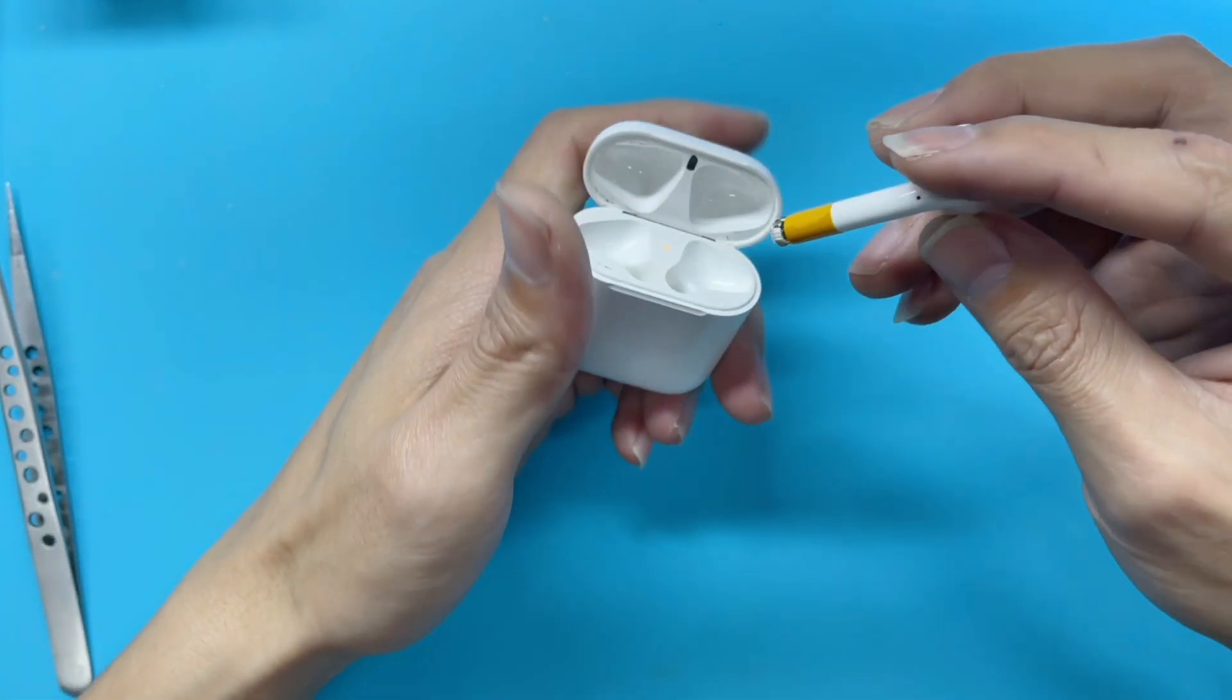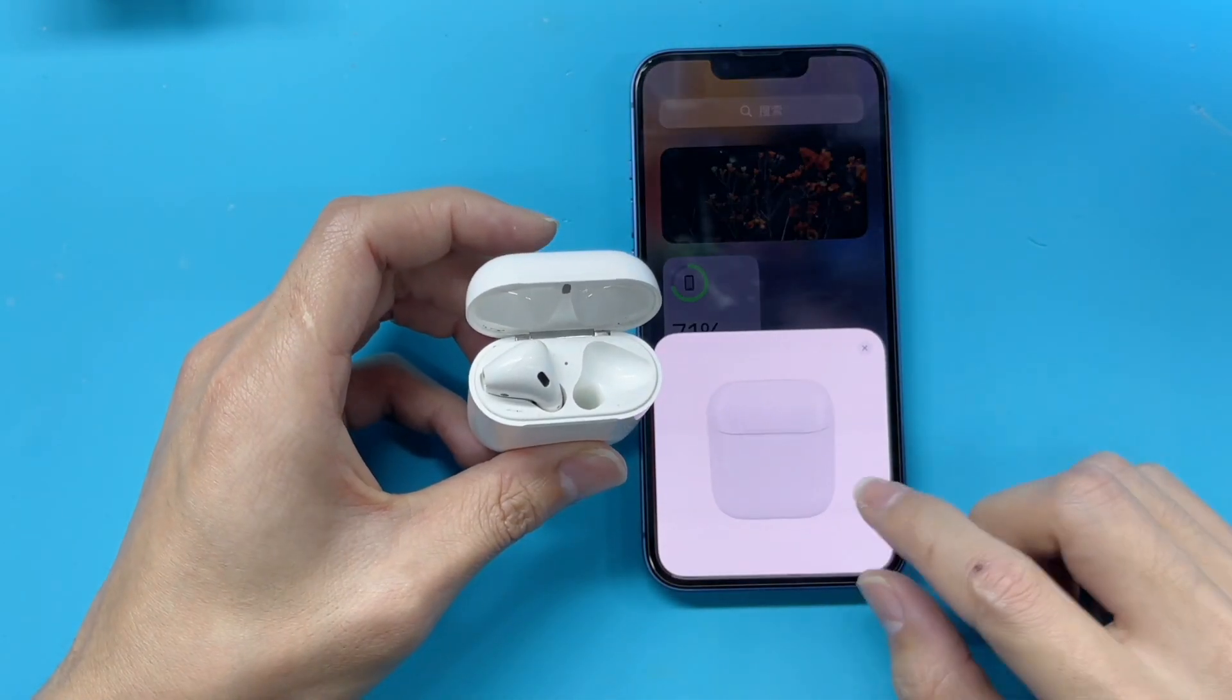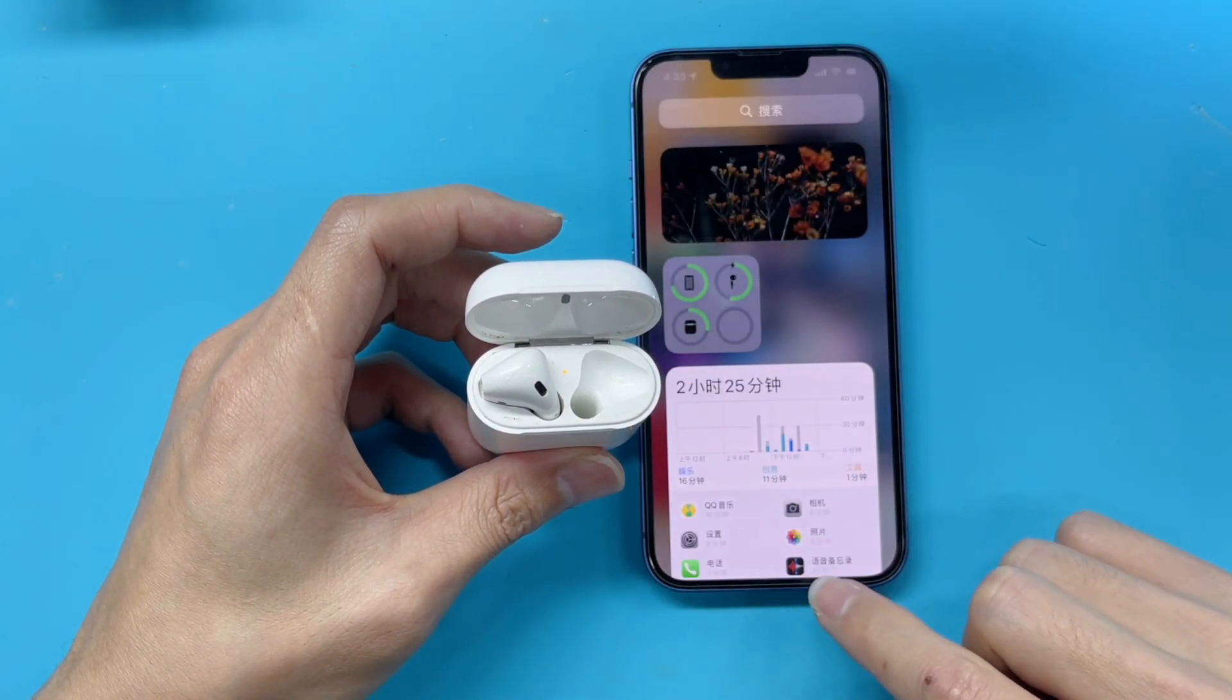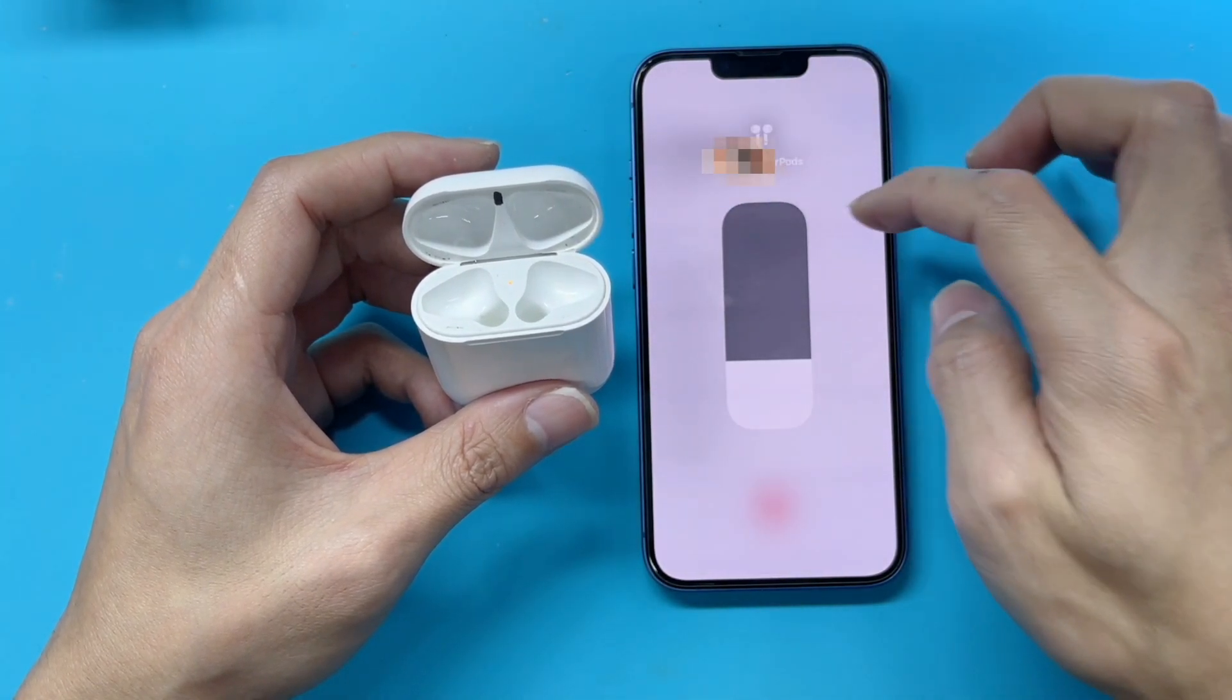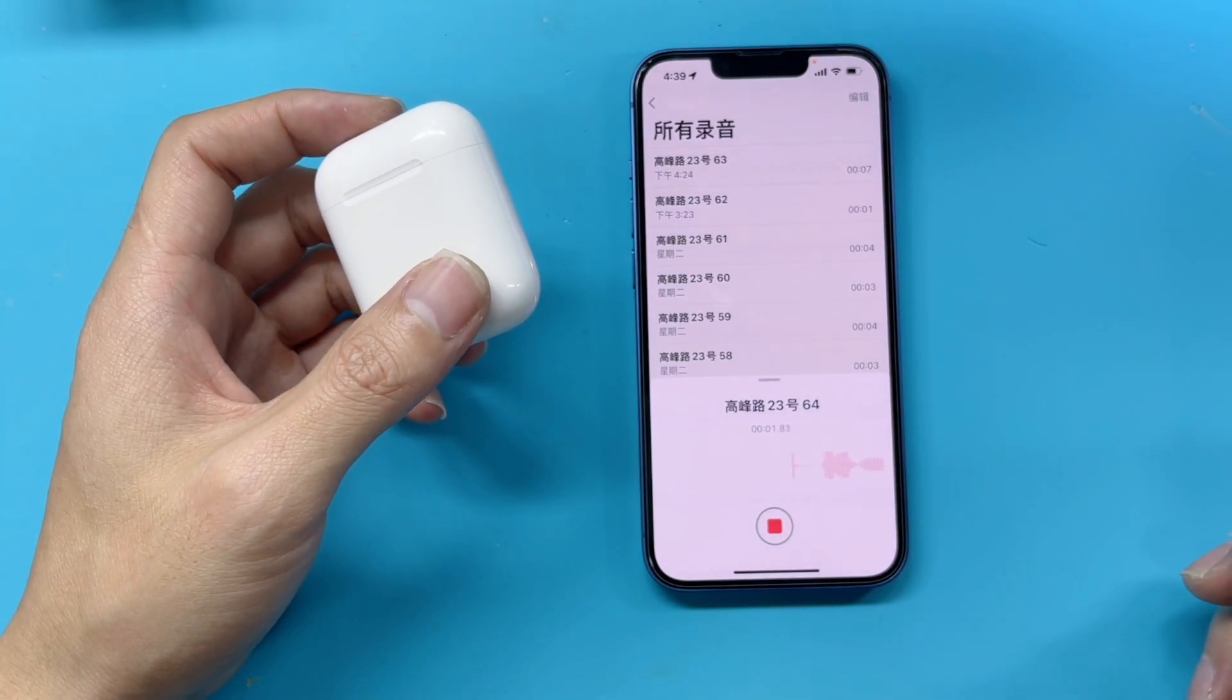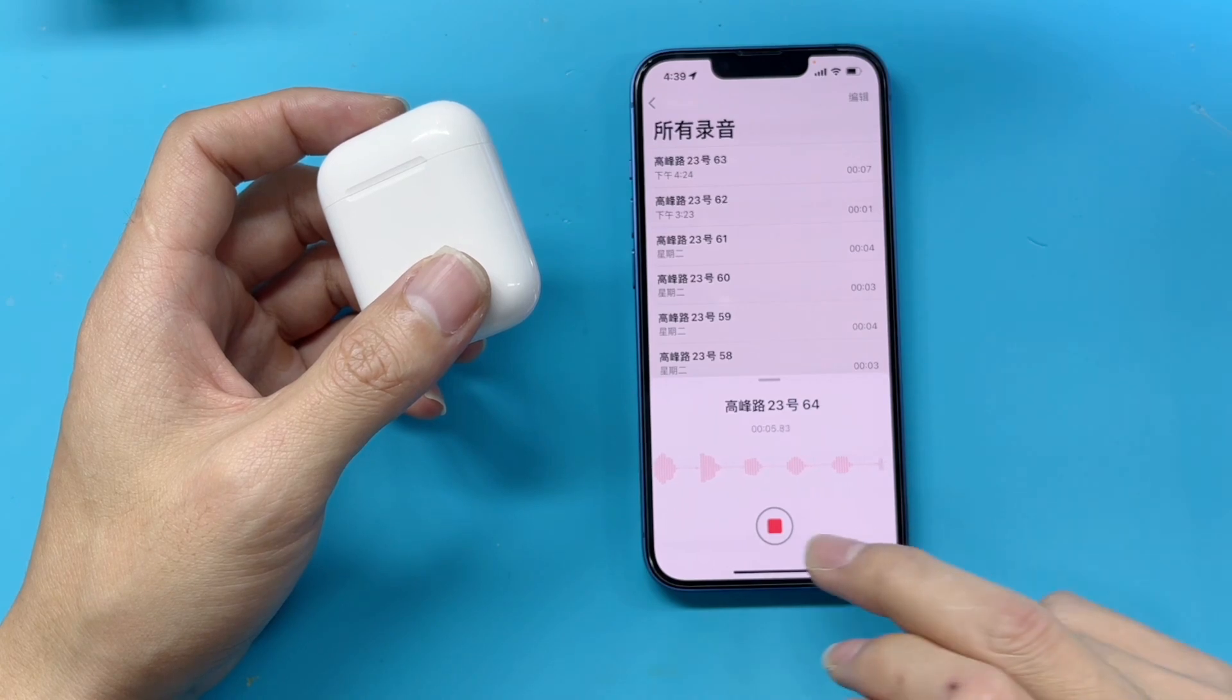Before sealing it back, we need to check all functions can work properly, such as connection, recording, touch sensor, interaction, phone call, etc. Let's open the voice memos again and try to record. We can find the disconnection issue we mentioned at the beginning has been solved.